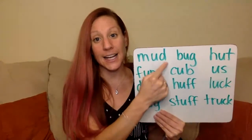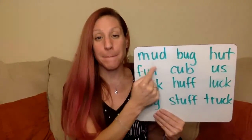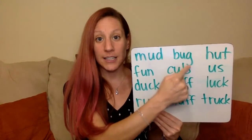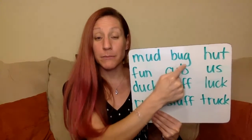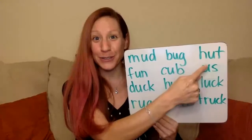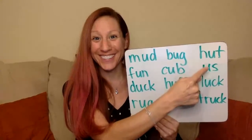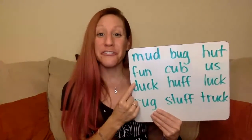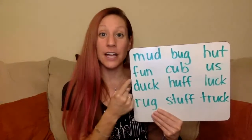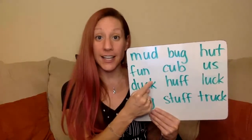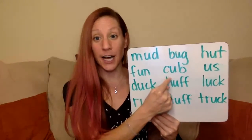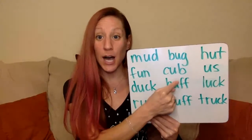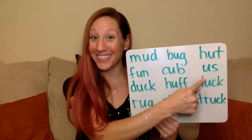We have m-uh-d: mud. B-uh-g: bug. Can you do this one on your own? Next row: f-uh-n: fun. C-uh-b: cub. Can you do this one on your own?